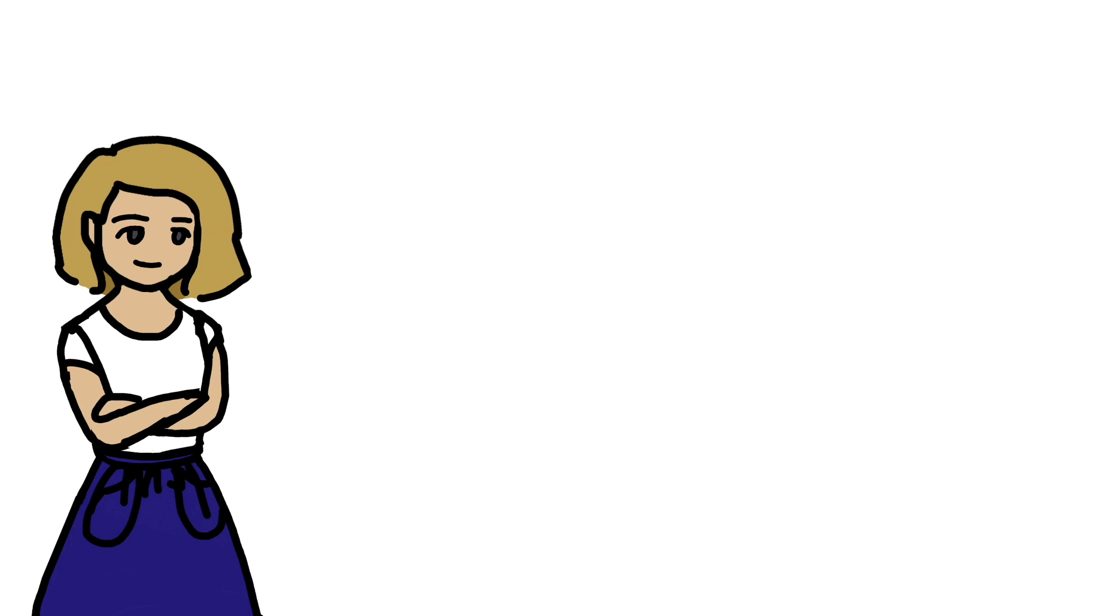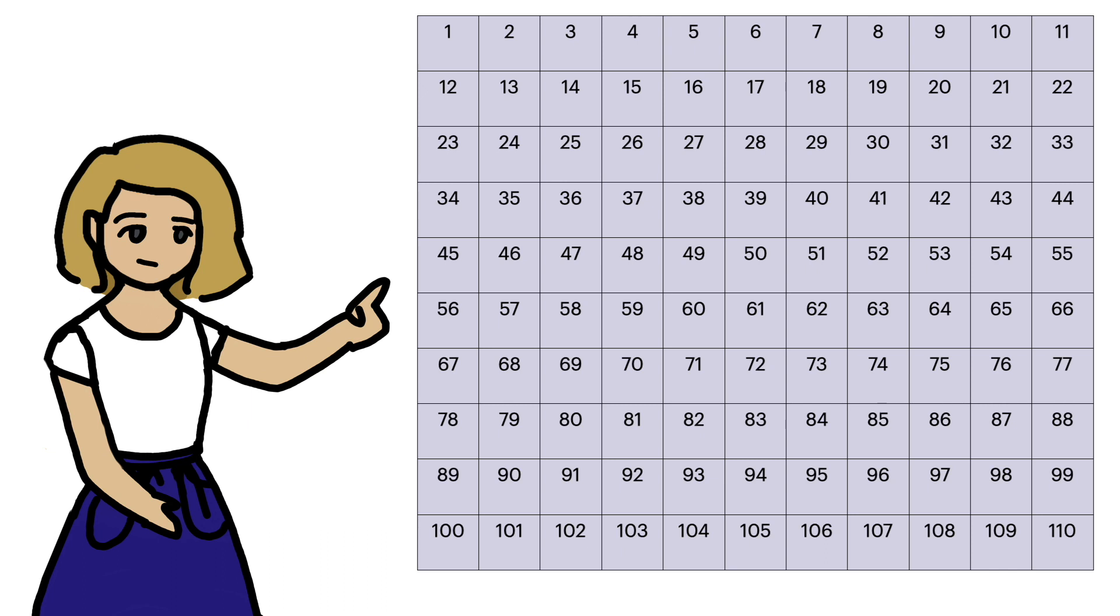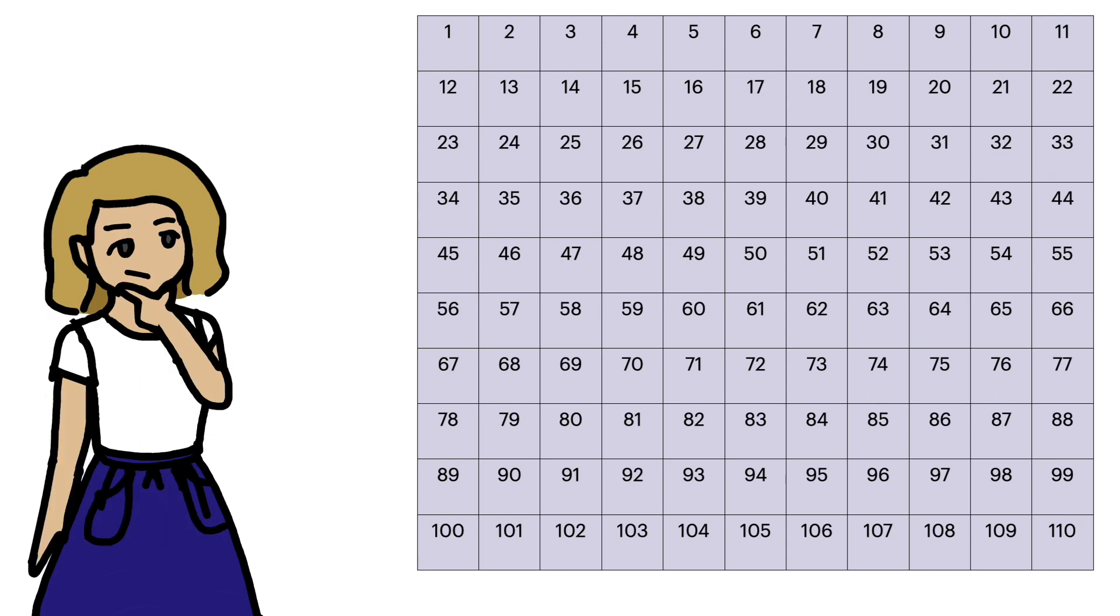The Euler sieve is a variation on the classic sieve of Eratosthenes. You start with all the positive integers up to some number n, which in this case is 110. And we're going to remove all the composite numbers, by removing multiples of 2, then multiples of 3, multiples of 5,